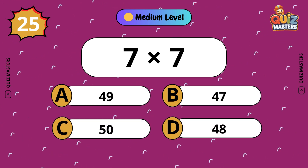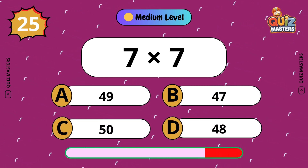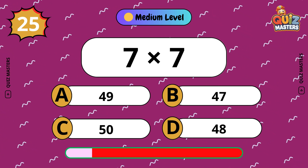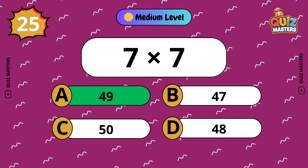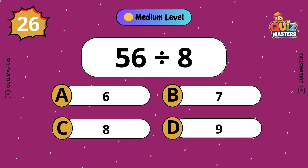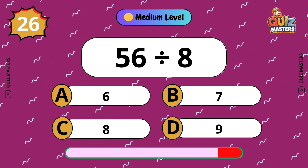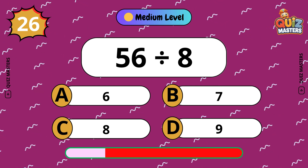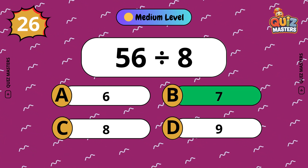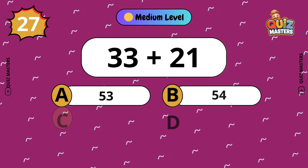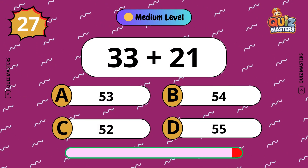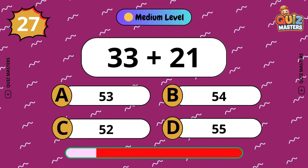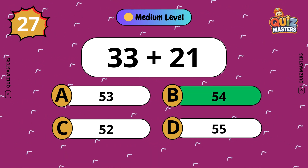7 by 7: 49. 56 divided by 8: 7. 33 plus 21: 54.